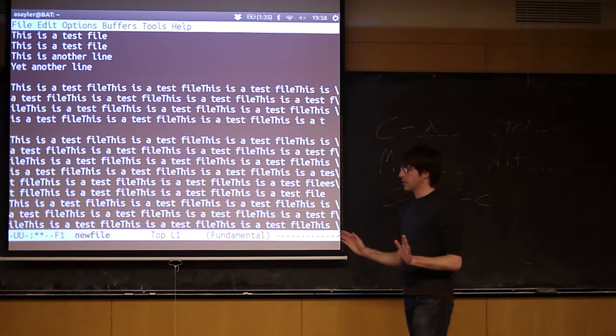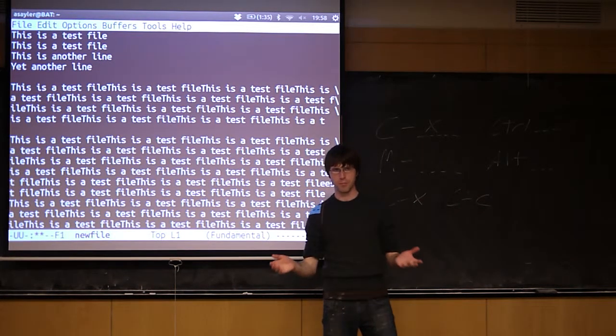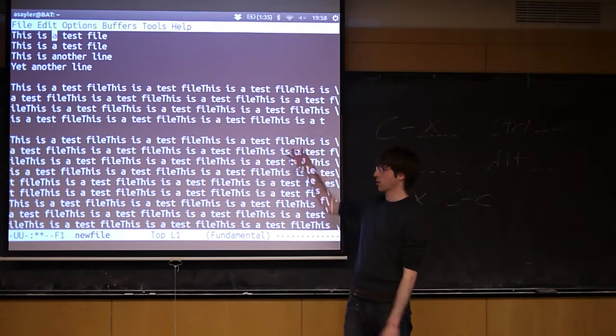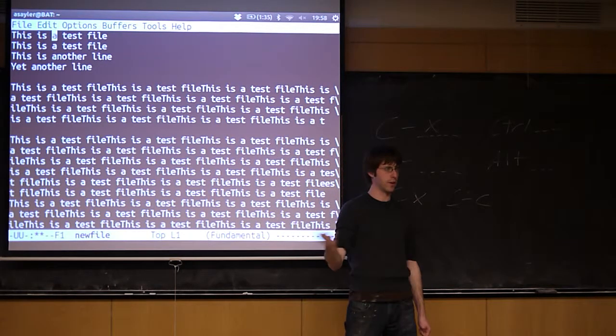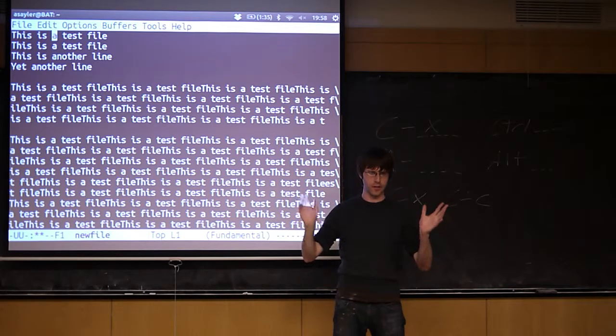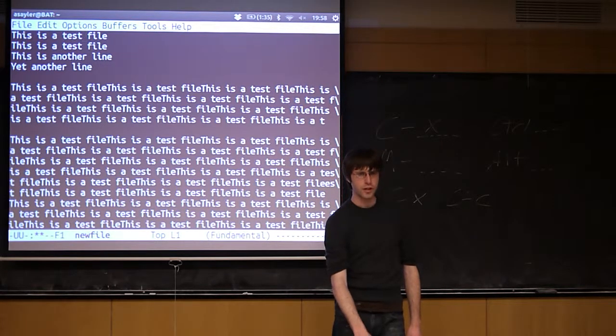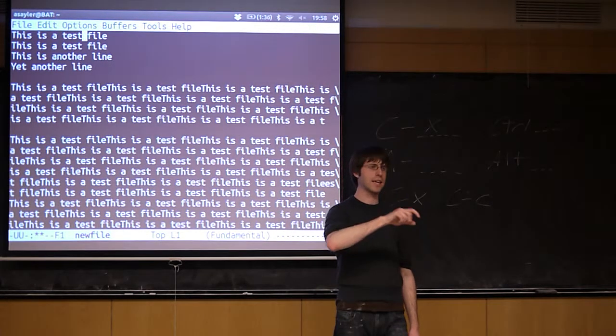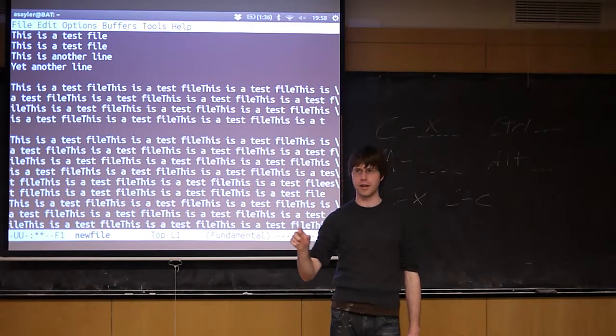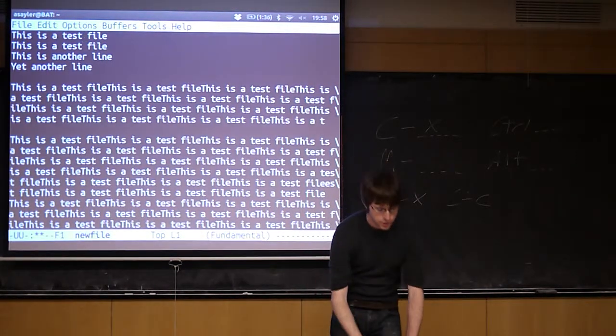So in Emacs, there's something called the mark. The mark is essentially just an invisible marker that you can put anywhere in the file and then use to do various things. So what I essentially want to do is I want to set a mark right here, and then I'm going to basically scroll to here. This is the equivalent of clicking and highlighting something in an editor that has a mouse.